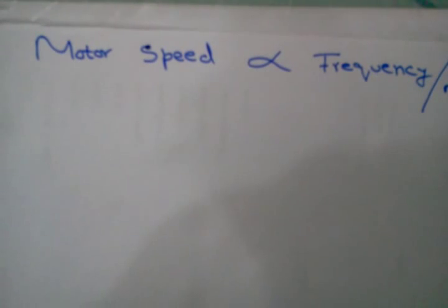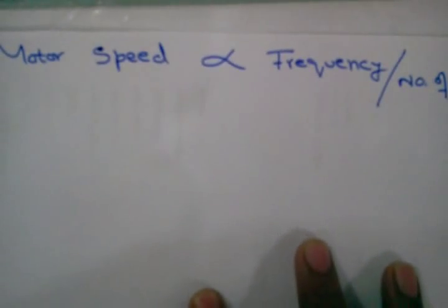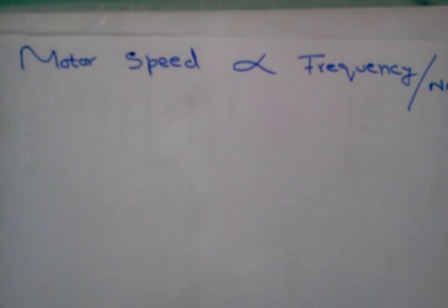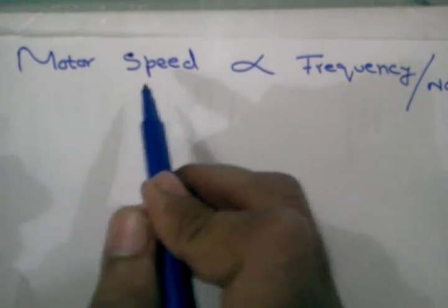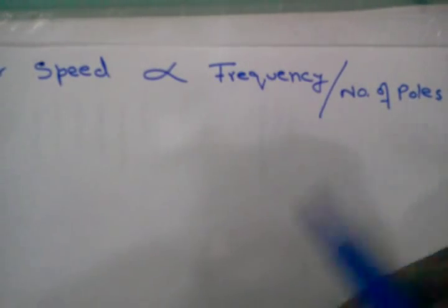Hi, this is Faizan and this is a video tutorial discussing the relationship between motor speed and frequency and number of poles. As we have seen, motor speed is directly proportional to applied frequency and inversely proportional to the number of poles.